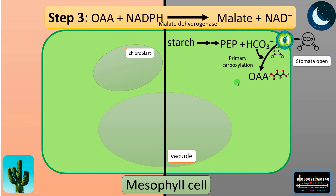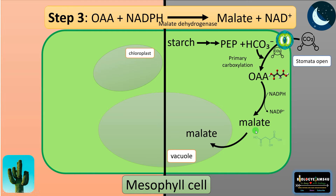Step three: oxaloacetate is converted to malic acid. It is a dehydrogenation reaction; the enzyme involved is malic dehydrogenase. Malic acid is also a four-carbon compound. This malate is then transported to the vacuole where it is stored during nighttime.